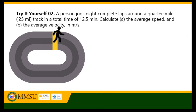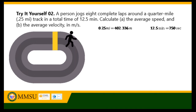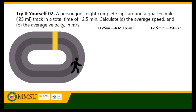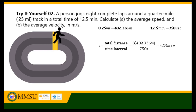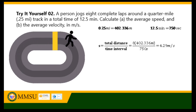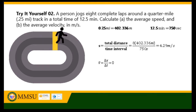Next, a person jogs eight complete laps around a quarter-mile track in a total time of 12.5 minutes. Calculate the average speed and average velocity in meters per second. Since the problem wants an answer in meters per second, we convert: 0.25 miles equals 402.336 meters, and 12.5 minutes equals 750 seconds. The distance traveled is 8 times 402.336 divided by 750 seconds. The average speed of the runner is 4.29 meters per second.